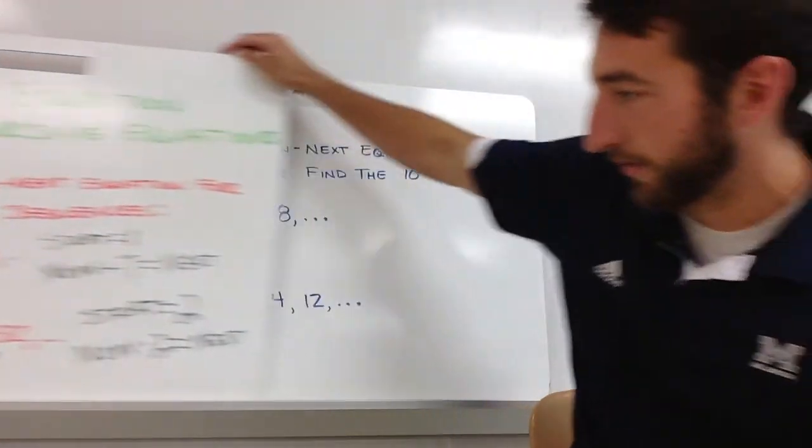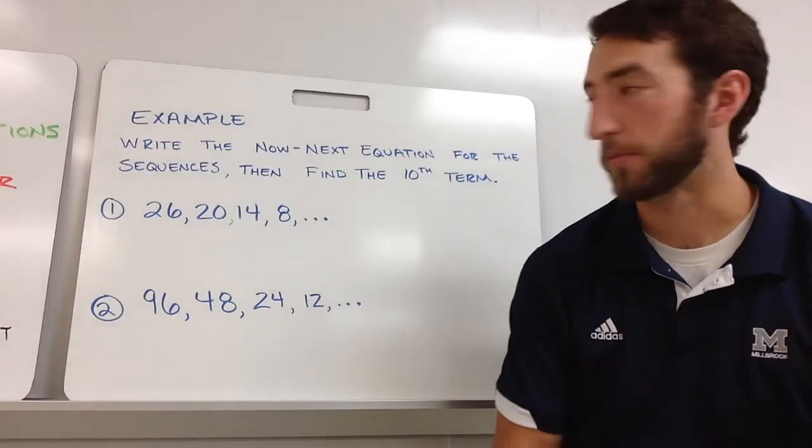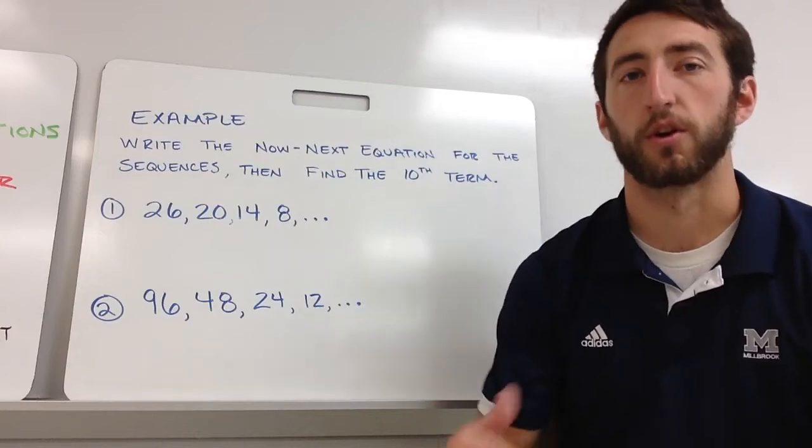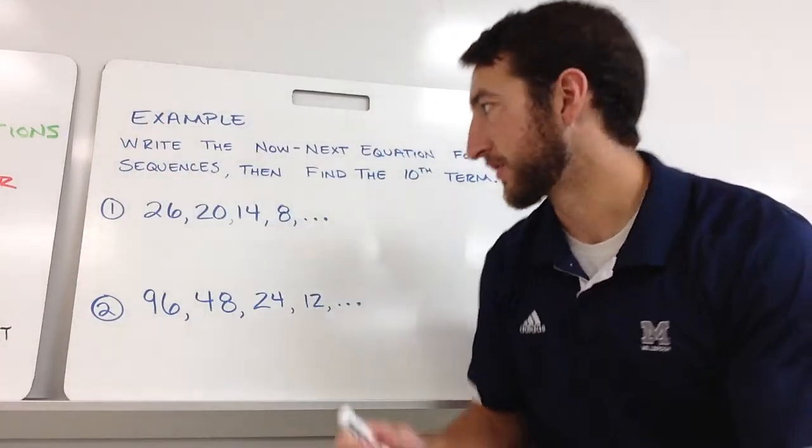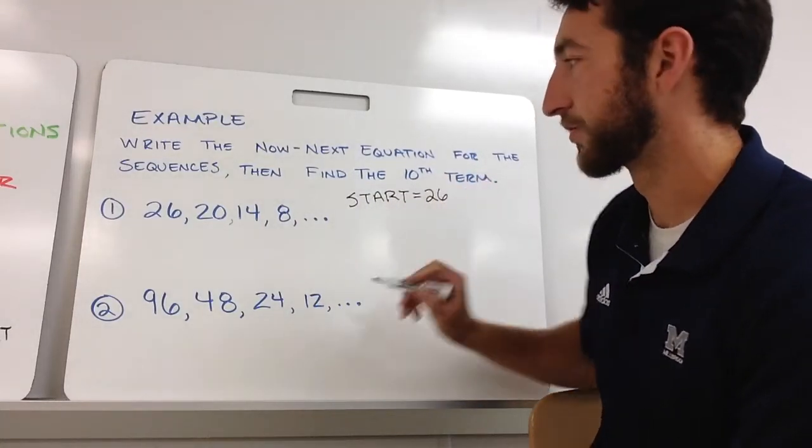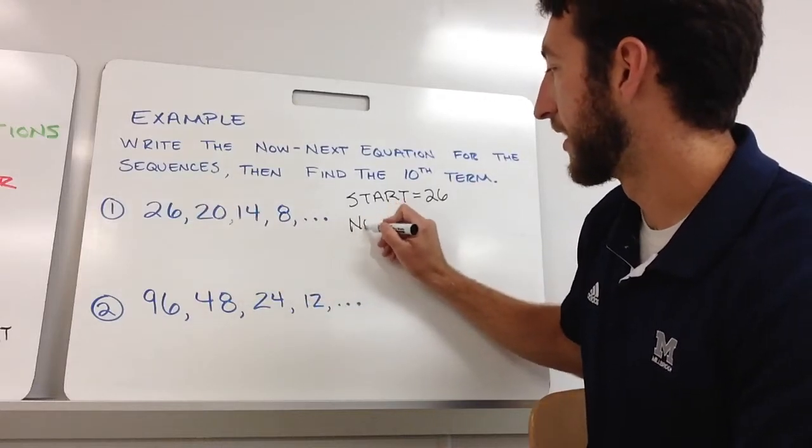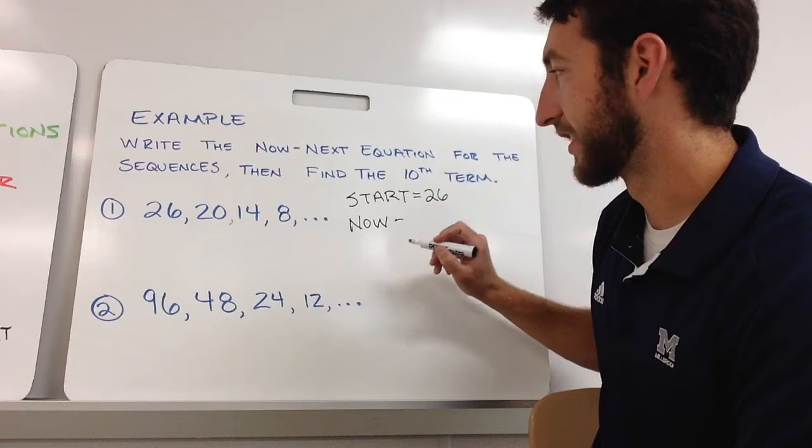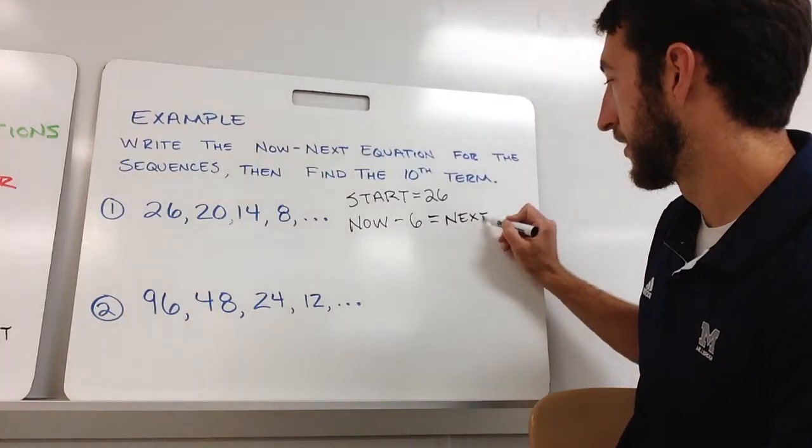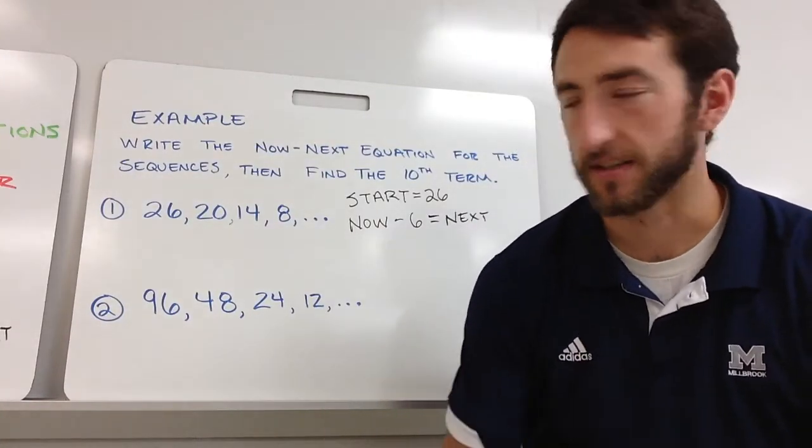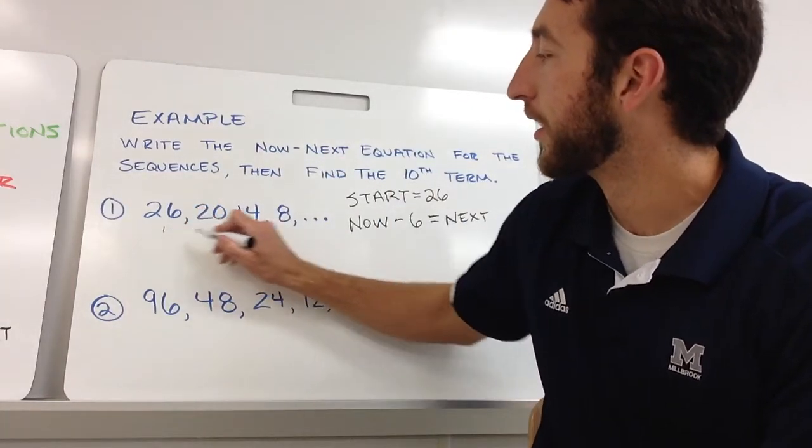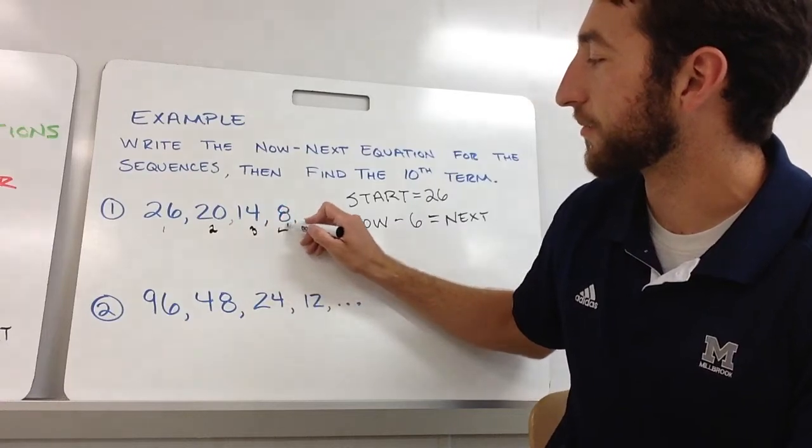Now let's go a little bit farther in depth with another example. I want to write the now-next equation for these sequences, then find the 10th term. So we want to go a little bit farther in the sequence and figure out what the 10th term is. Figure out my start. You always have to write the start in there. My start is 26 and it looks like I'm taking my now and subtracting 6 each time. I'm taking my now minus 6 gives me my next number. And then I want to find the 10th term. This is my first term, second term, third term, fourth.